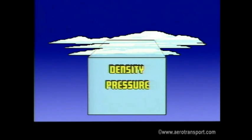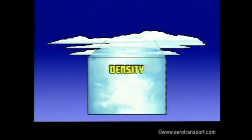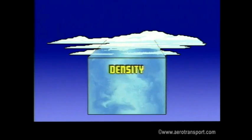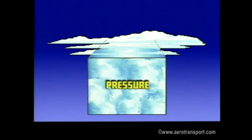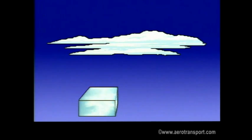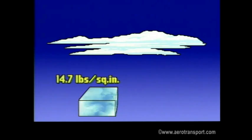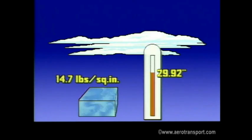First, we will consider the atmosphere and changes in its properties that affect flight. Two properties we concern ourselves with are density and pressure. Density refers to the mass or weight of the air in a given volume. Changes in that density are measured as air pressure. At sea level, air pressure averages about 14.7 pounds per square inch. Barometric pressure may also be measured in inches of mercury. The pressure at sea level is the pressure required to raise mercury in a barometer to a height of 29.92 inches.